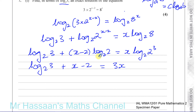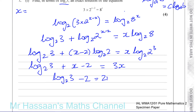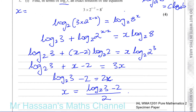We want to find x in terms of log to the base 2 of 3. Using the power law on the right, log to the base 2 of 2 cubed gives 3 times x times log to the base 2 of 2, which becomes 3x. So I can subtract x from both sides. I have log to the base 2 of 3, minus 2, equals 3x minus x, which is 2x. Therefore x equals log to the base 2 of 3 minus 2, all divided by 2. That's the answer to part 1.